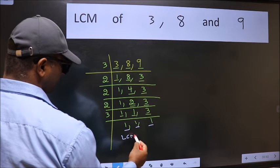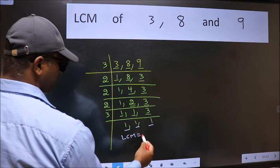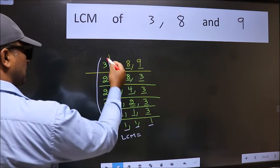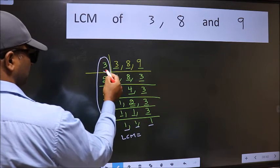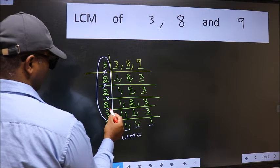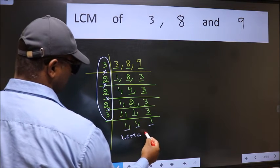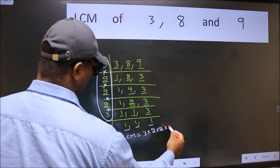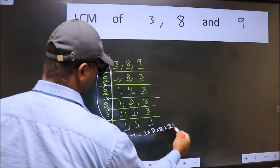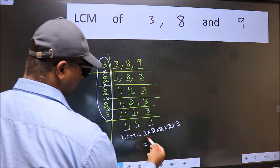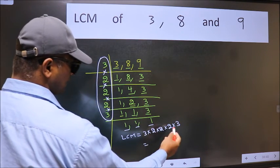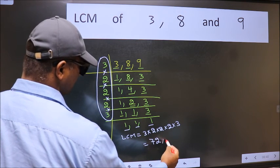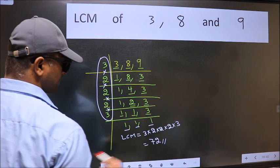So our LCM is the product of these numbers. That is 3 into 2, into 2, into 2, into 3. When we multiply these numbers, we get 72. So 72 is our LCM.